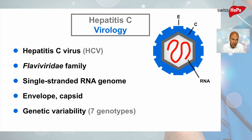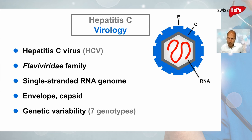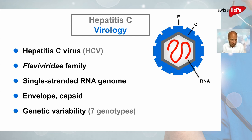The Hepatitis C virus is a member of the virus family called Flaviviridae. Other members of this family are the yellow fever virus, dengue virus, Zika, and others. The virus has a single-stranded RNA genome surrounded by a capsid, which is in turn surrounded by an envelope. This virus is genetically highly variable — we can distinguish seven different genotypes — and individual viruses circulating in a given patient have differences in their envelope protein structure, making it very difficult to develop a conventional vaccine against this viral infection.